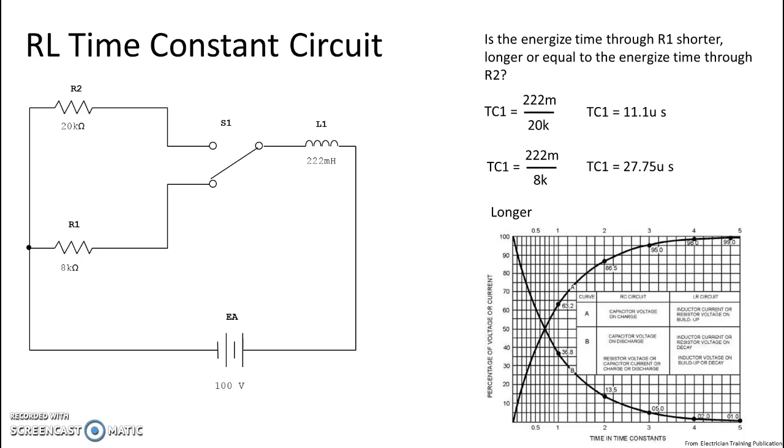And the smaller denominator is going to give us the larger answer. So if you know those about fractions, then you can determine without doing the math which one of the two paths will be longer and which one will be shorter.